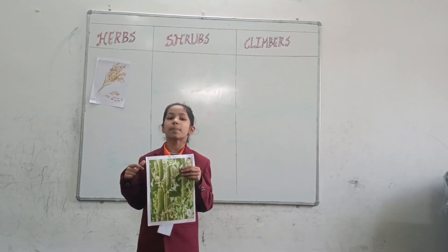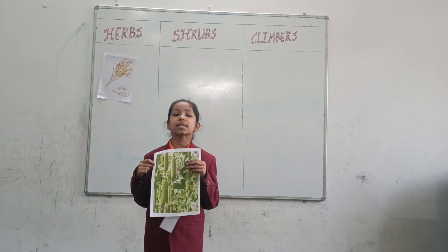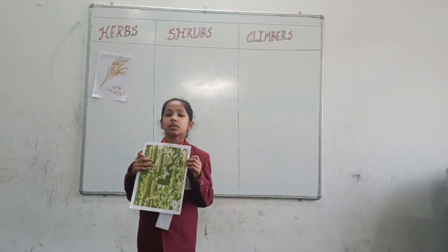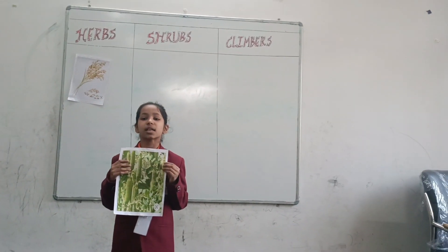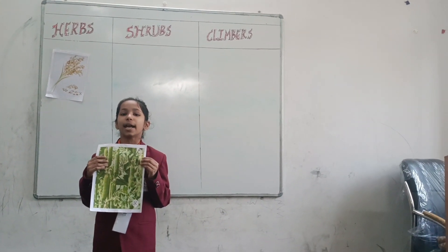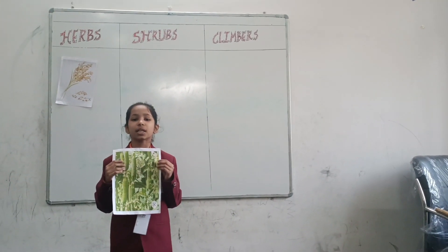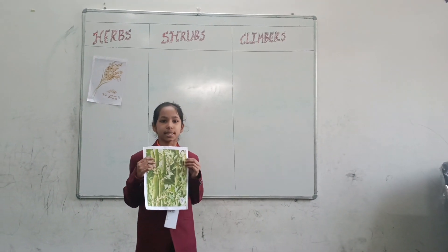This is a sweet plant, so it is a herb. Raw peas are used as a vegetable and dried peas are also used.